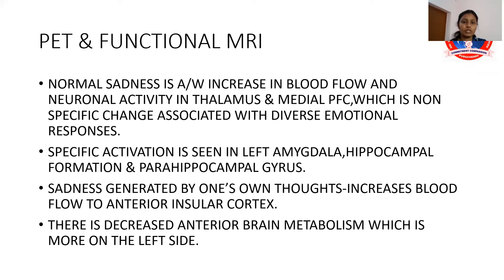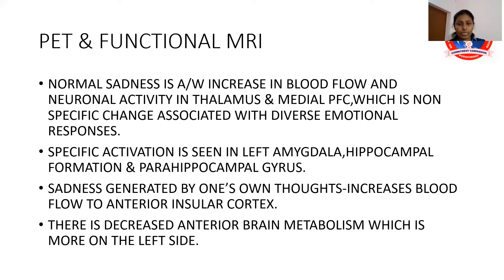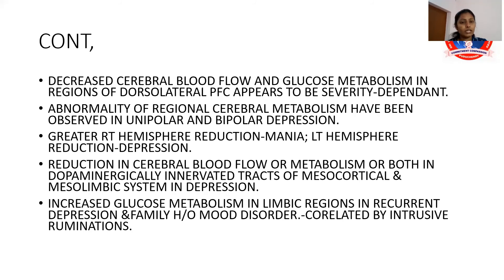Functional MRI findings: Normal sadness is associated with increased blood flow and neuronal activity in the thalamus and medial prefrontal cortex — a non-specific change associated with diverse emotional responses. Specific activation is seen in the left amygdala, hippocampal formation, and parahippocampal gyrus. When sadness is generated by one's own thoughts, there is increased blood flow to the anterior insular cortex. Decreased anterior brain metabolism, more pronounced on the left side, is also noted.